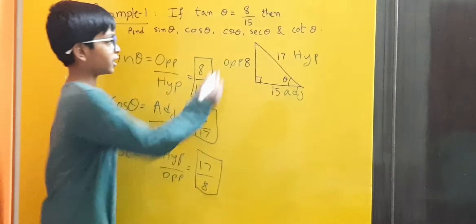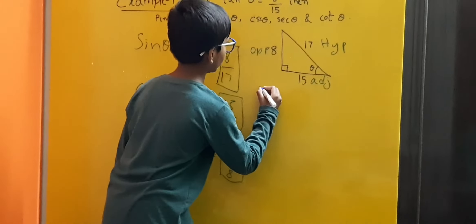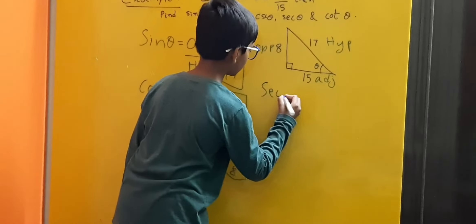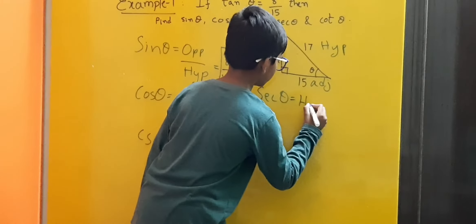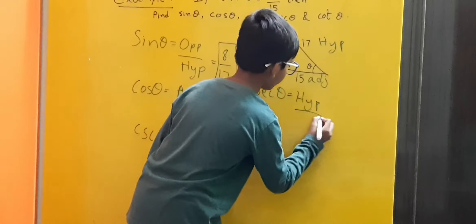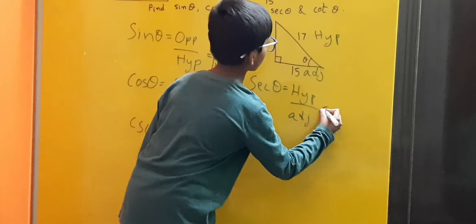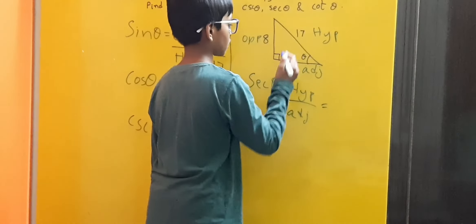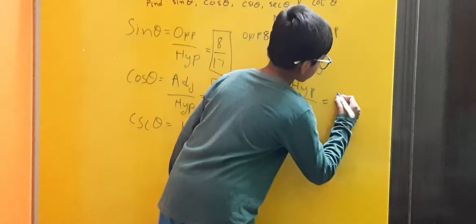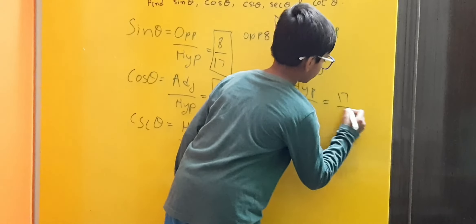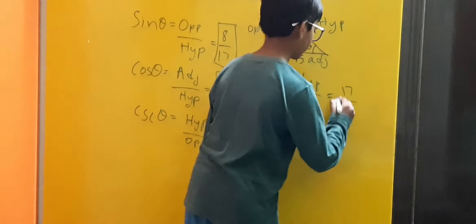Now let us find secant theta. We have the formula: secant theta is equal to hypotenuse by adjacent. Here, 17 is the hypotenuse and 15 is the adjacent, so we write 17 by 15. Therefore, secant theta is equal to 17 by 15.